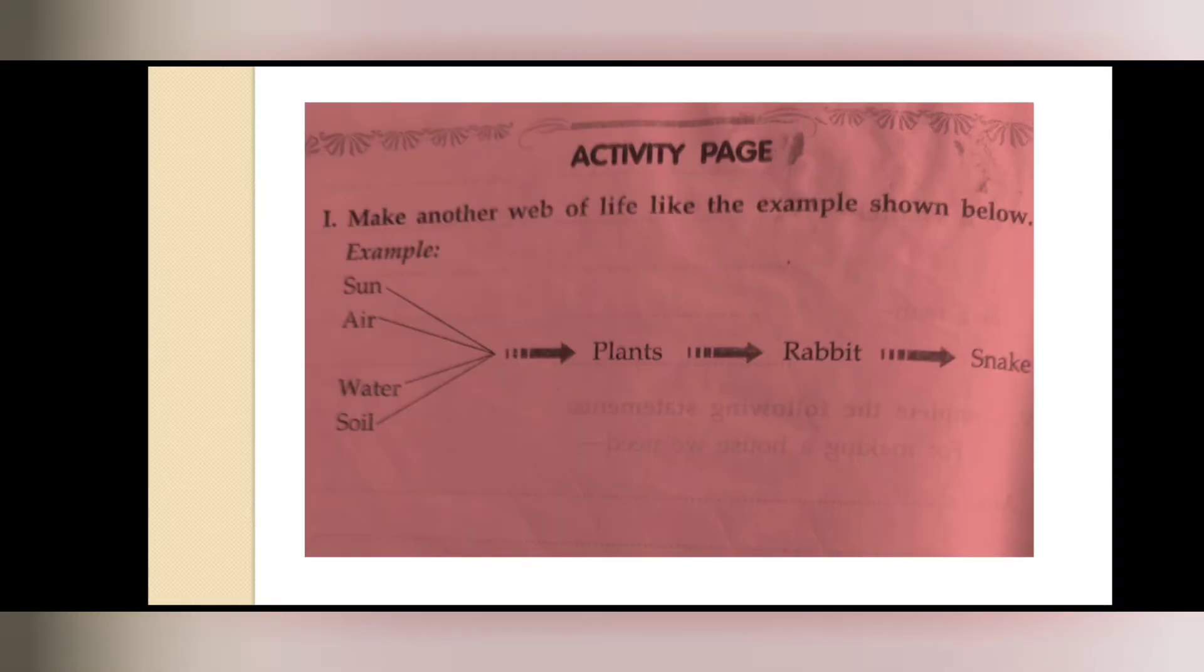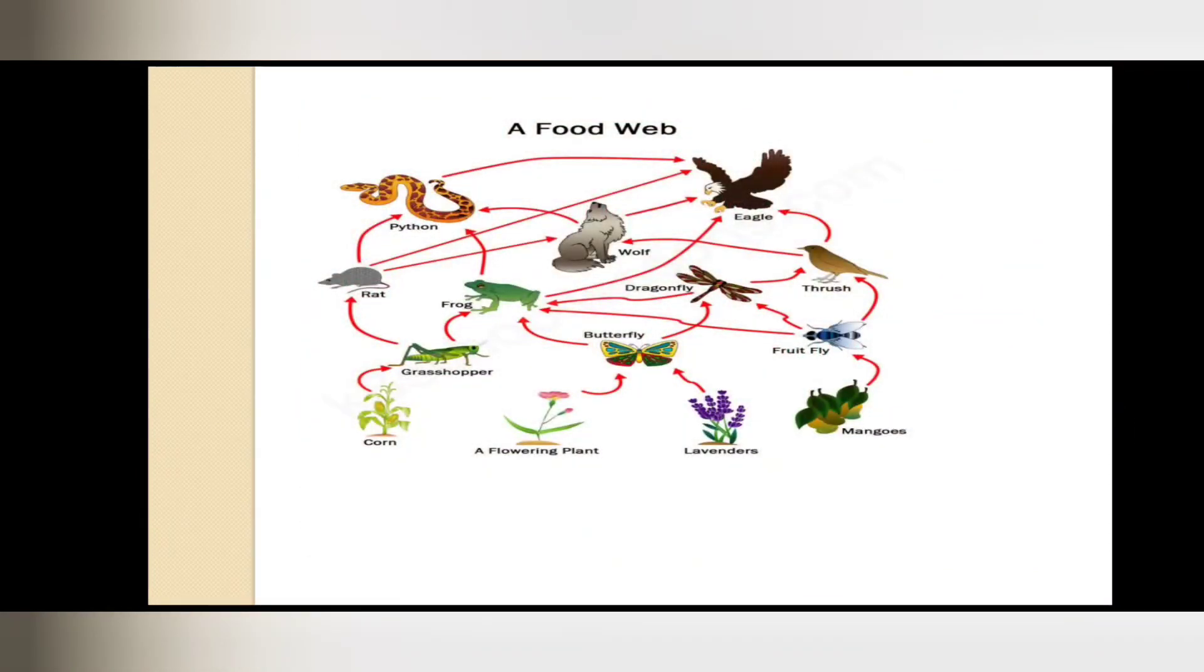So now this is one activity that you have to do. Make another web of life like the example shown below. Here you can see a web of life has been made. Like sun, air, water, soil - all these are needed by plants. Plants are needed by rabbits. Rabbits are eaten by snakes. In this way, all these are interdependent. Similarly, you should make another web of life.